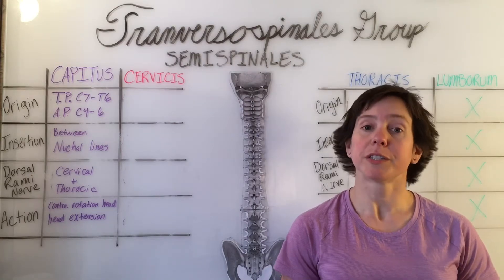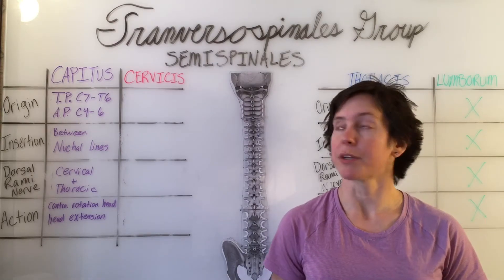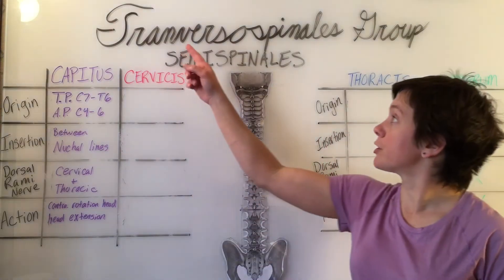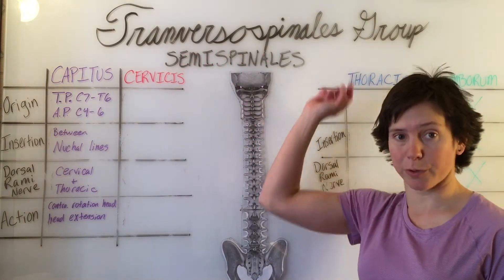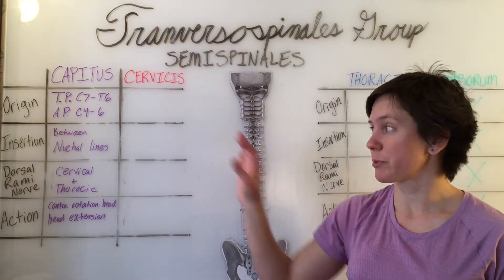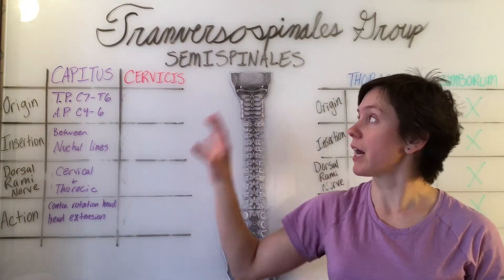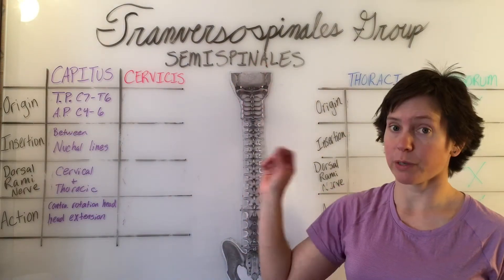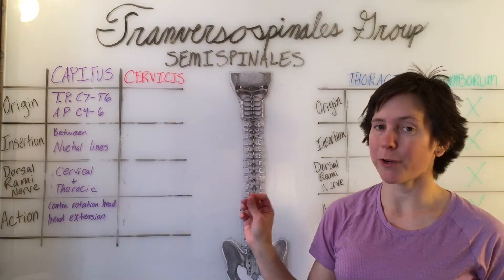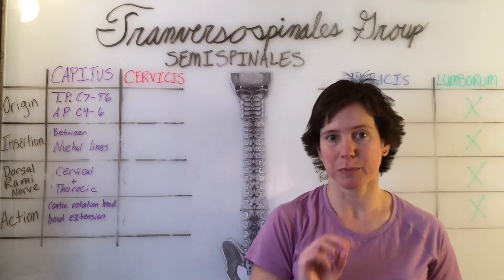Now we're entering a different group of deep back muscles called the transversospinales group. Just because I have the same chart set up does not mean that these muscles we're about to go over are part of the erector spinae.